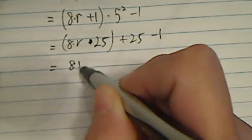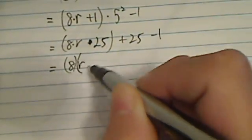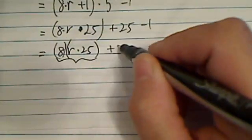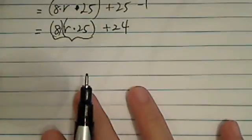Here I have 8r times 25, so this portion is a multiple of 8, and then plus 24. Of course, that's a multiple of 8.